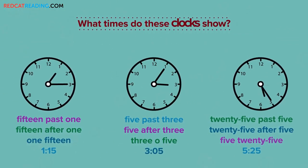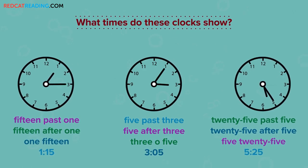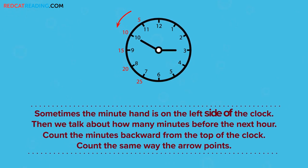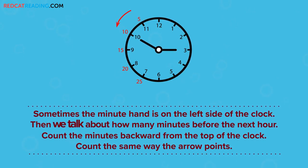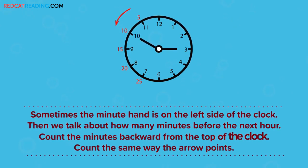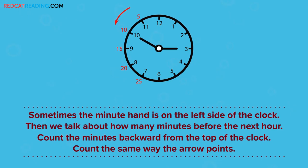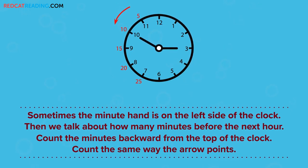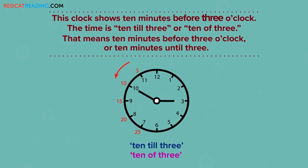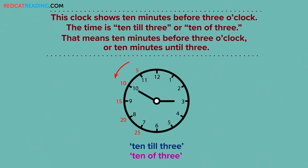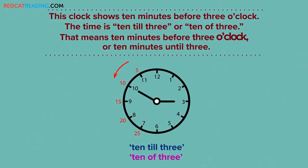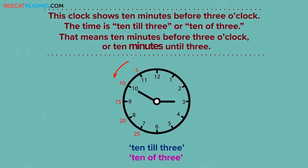What times do these clocks show? Sometimes the minute hand is on the left side of the clock. Then we talk about how many minutes before the next hour. Count the minutes backward from the top of the clock. Count the same way the arrow points. This clock shows ten minutes before three o'clock. The time is ten till three, or ten of three. That means ten minutes before three o'clock, or ten minutes until three.